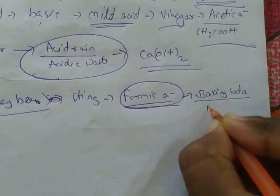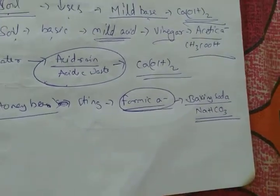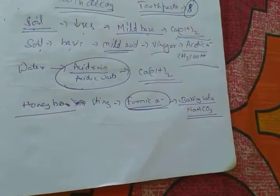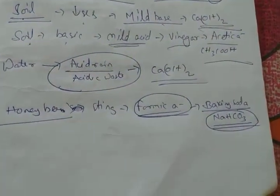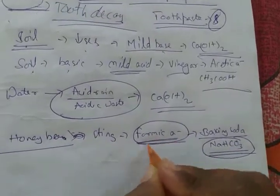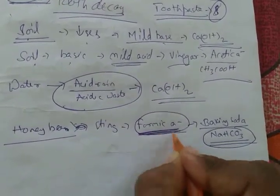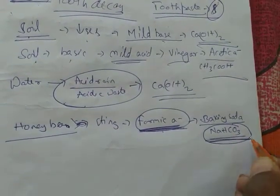This can be treated by using baking soda, whose formula is NaHCO3 (sodium bicarbonate). As it is basic in nature - metal carbonates, metal bicarbonates, and metal oxides are basic in nature - it neutralizes the acid injected into our body.